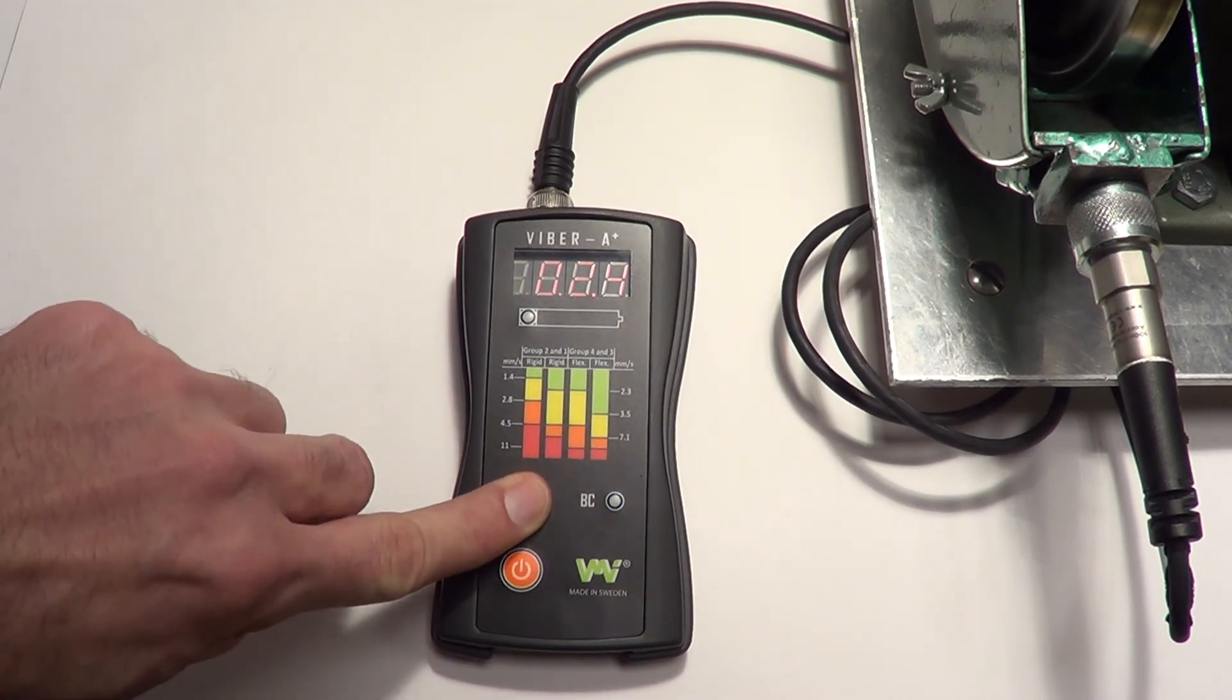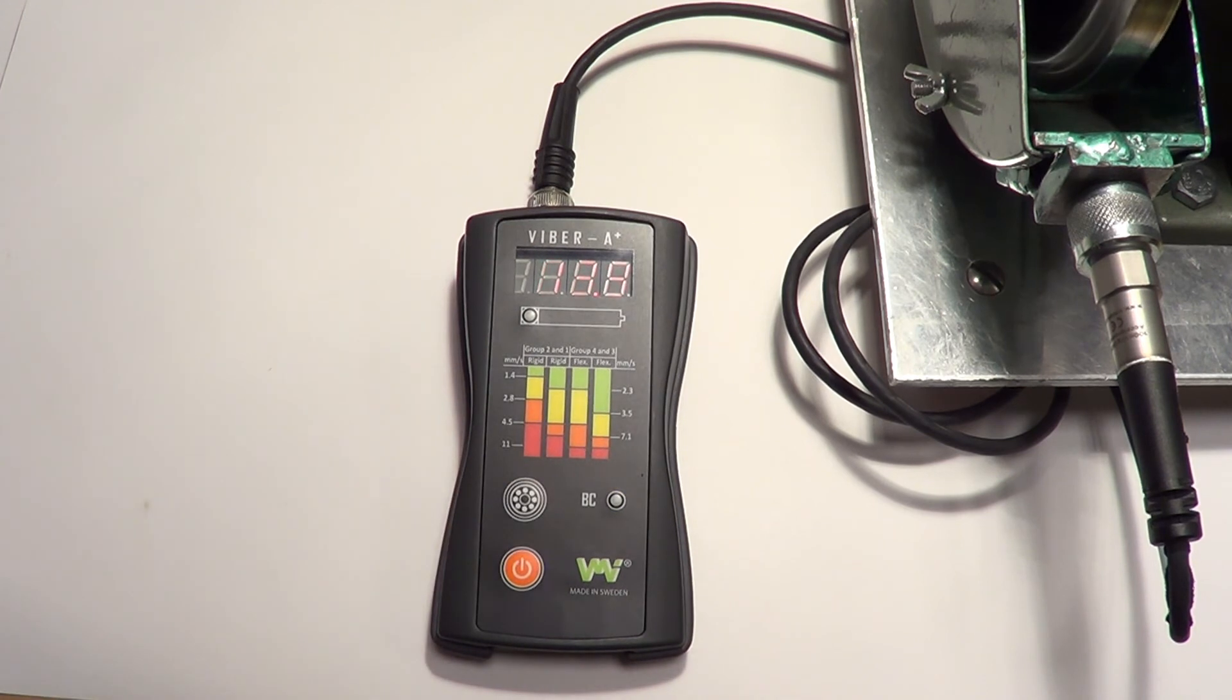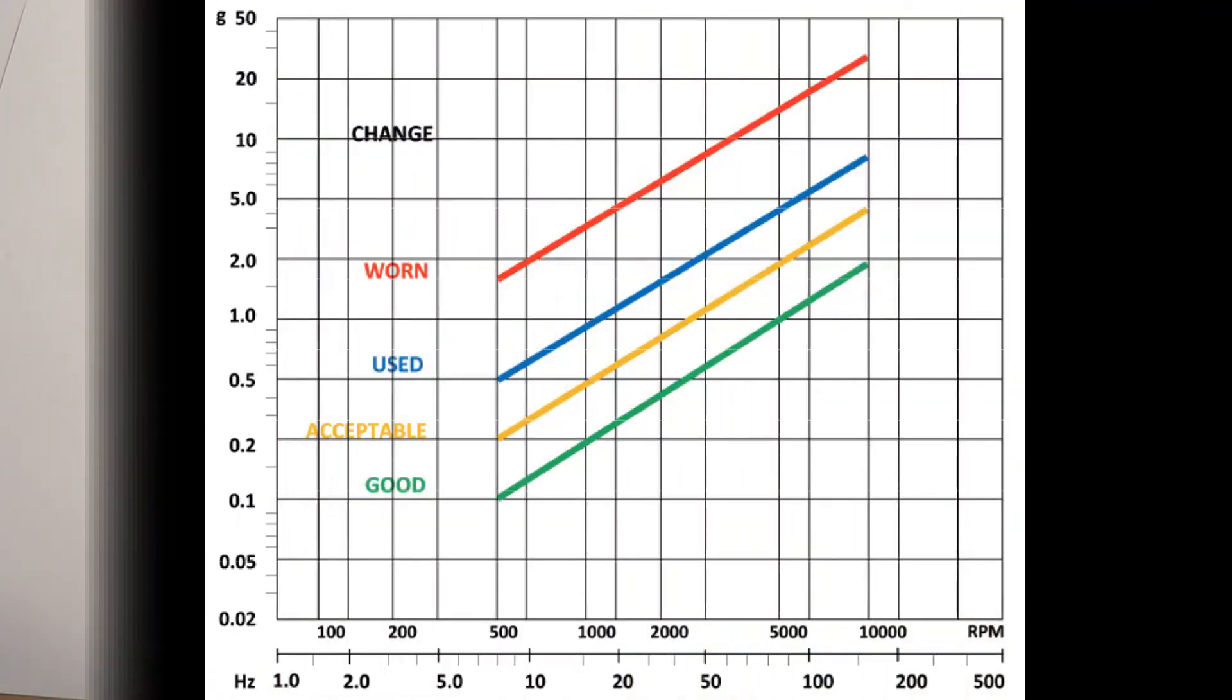To measure vibrations again, press the bearing condition button once more. VMI recommends consulting this graph, which is also provided in your instruction manual when interpreting bearing condition readings.